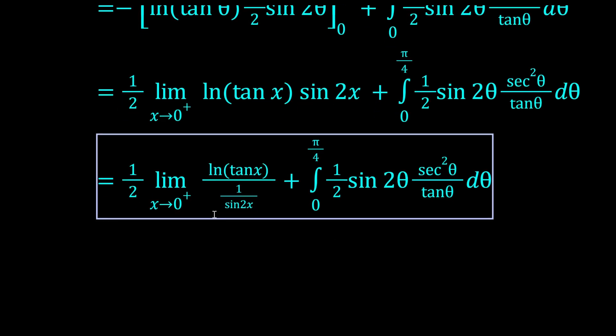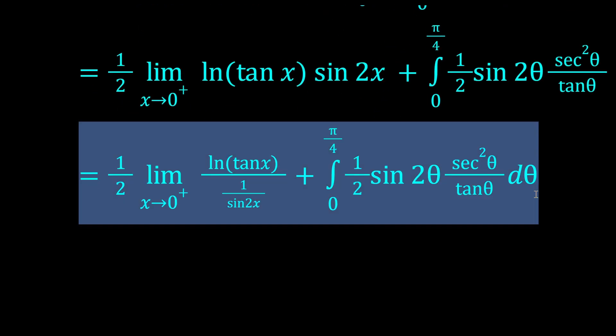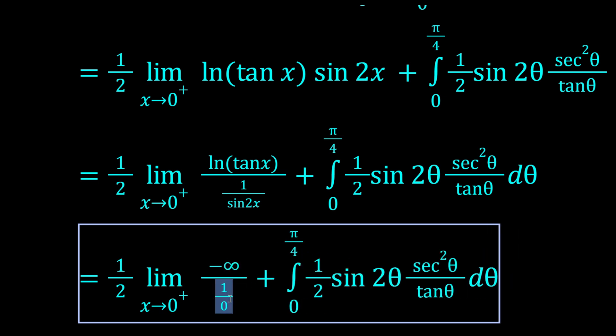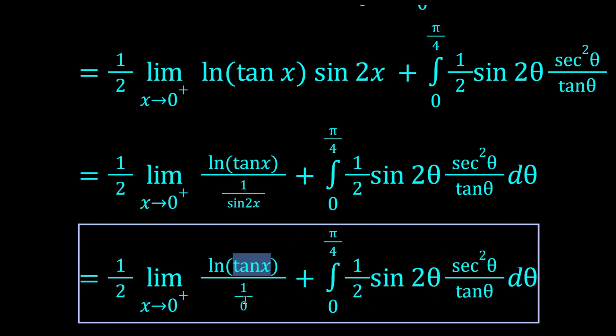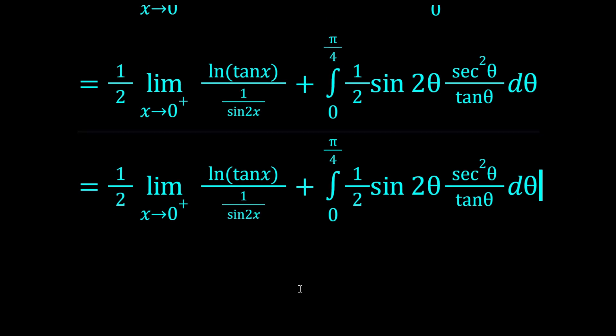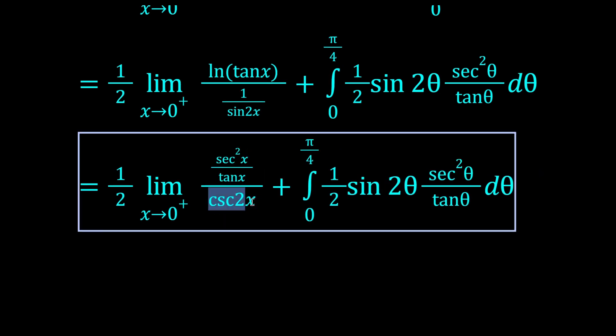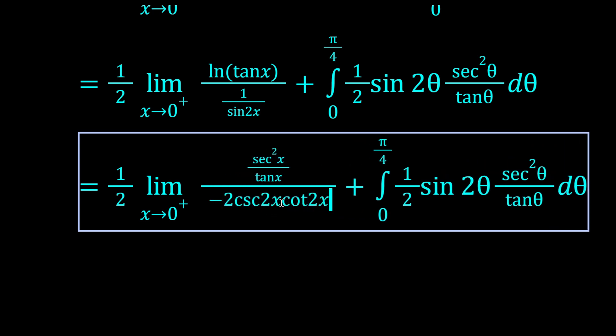Okay, maybe we write this as log tan over 1/sin 2x. That's the same thing, right? But now numerator and denominator both go to infinity, kind of, or plus minus infinity. And that's a good indication to do L'Hopital's rule. So L'Hopital's rule is just when you differentiate the numerator and denominator. So the denominator was cosec 2x, but when we differentiate it, it'll become negative 2 cosec 2x cot 2x. Okay, so we've differentiated numerator and denominator.